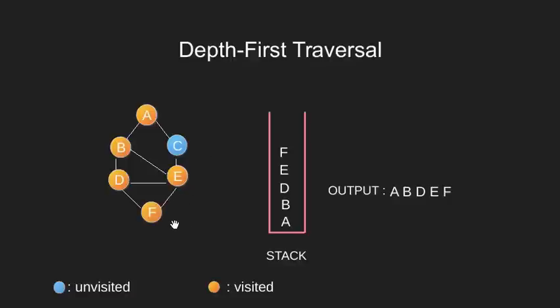Now we see unvisited adjacent nodes of F. We find that all the adjacent nodes are visited and hence there is no way. So we backtrack, we pop node F from top of the stack.